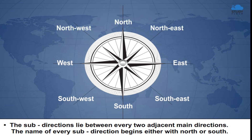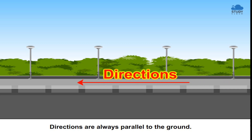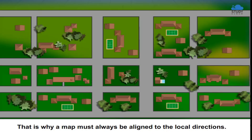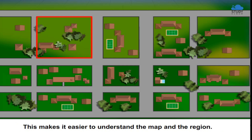The name of every sub-direction begins either with North or South. Directions are always parallel to the ground. That is why a map must always be aligned to the local directions. This makes it easier to understand the map and the region.